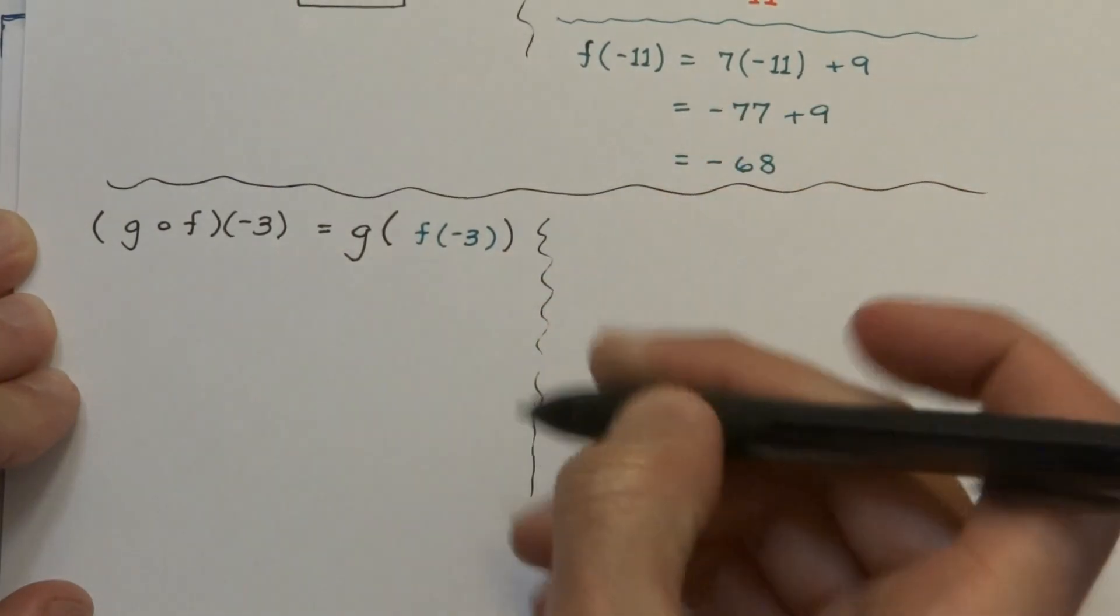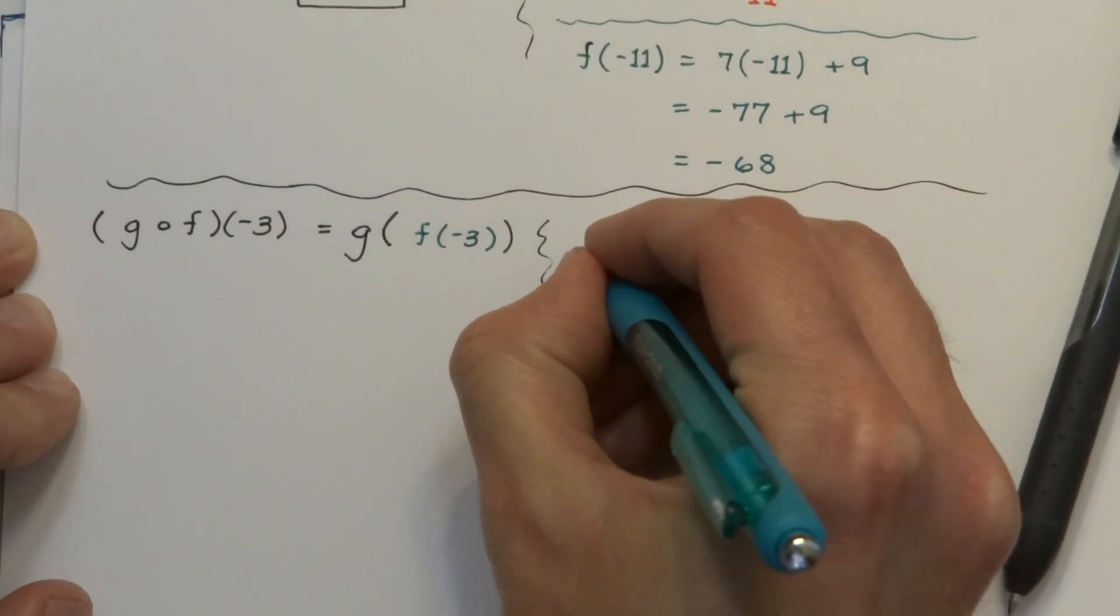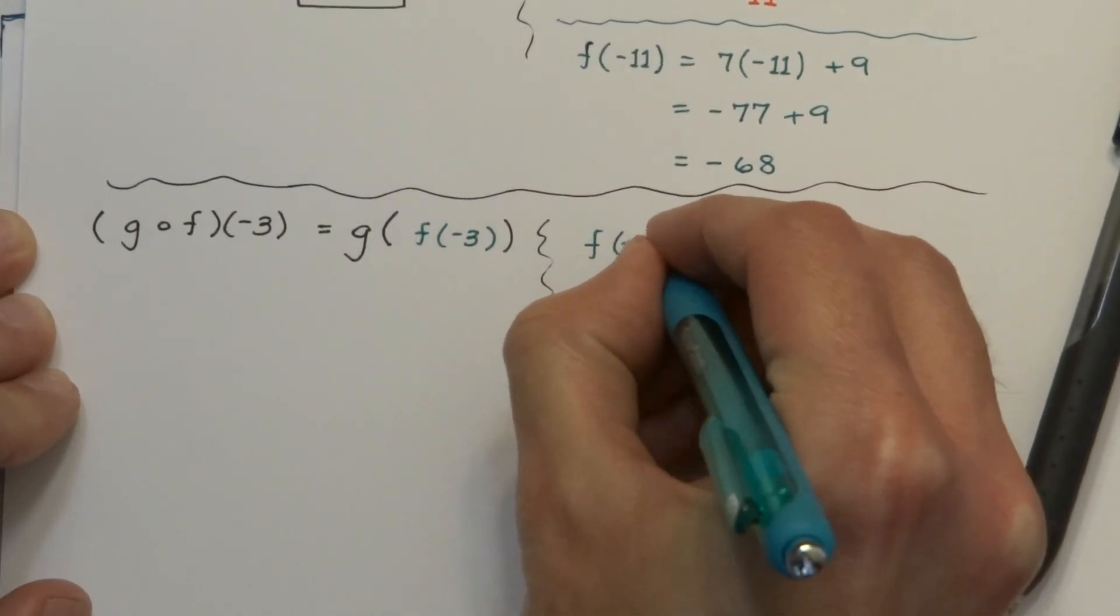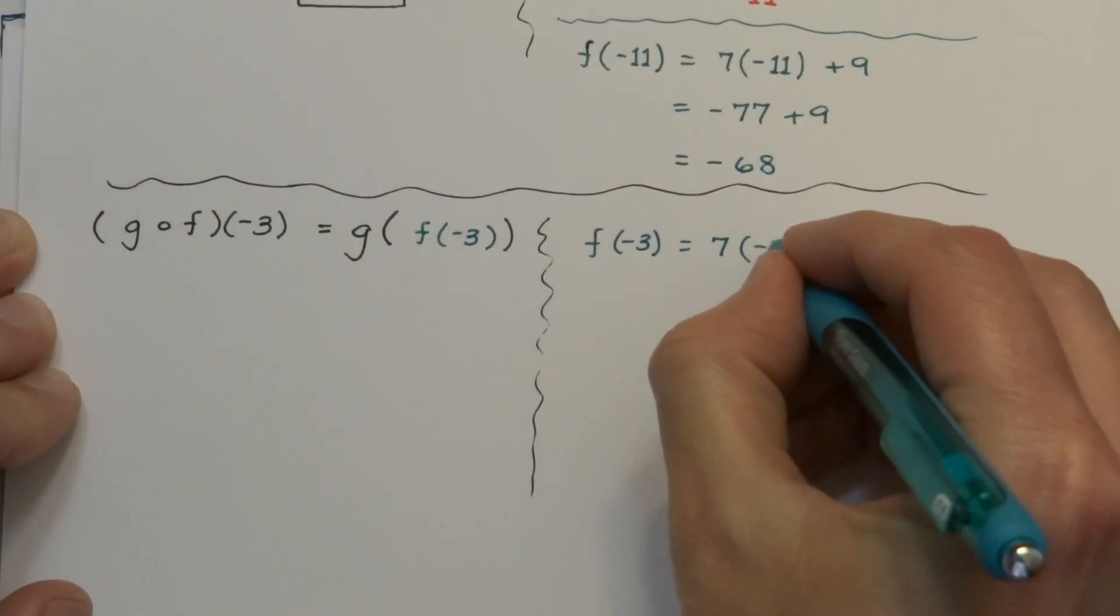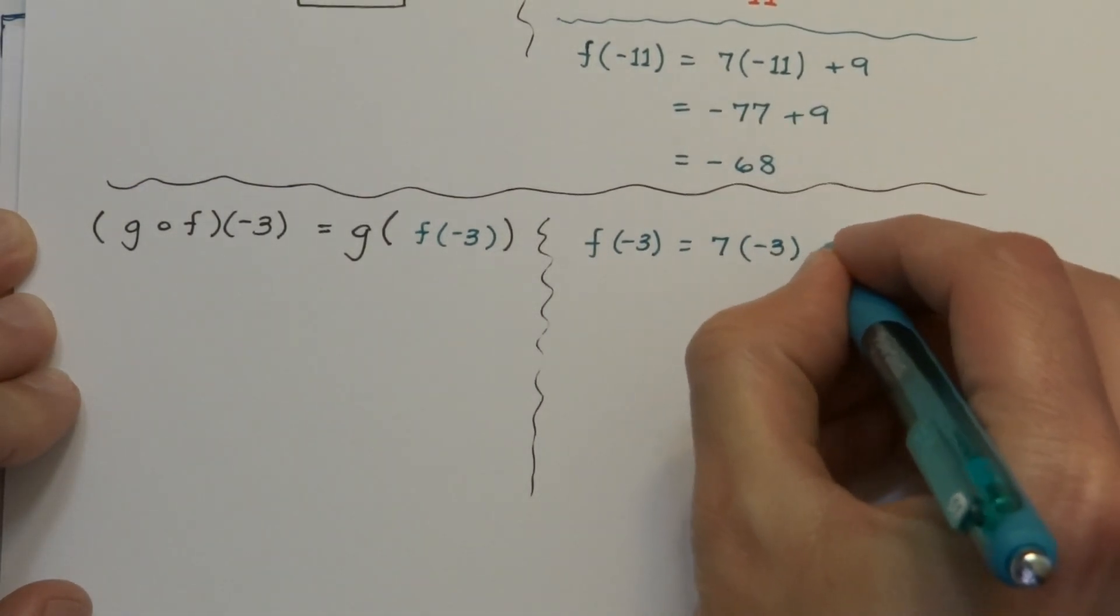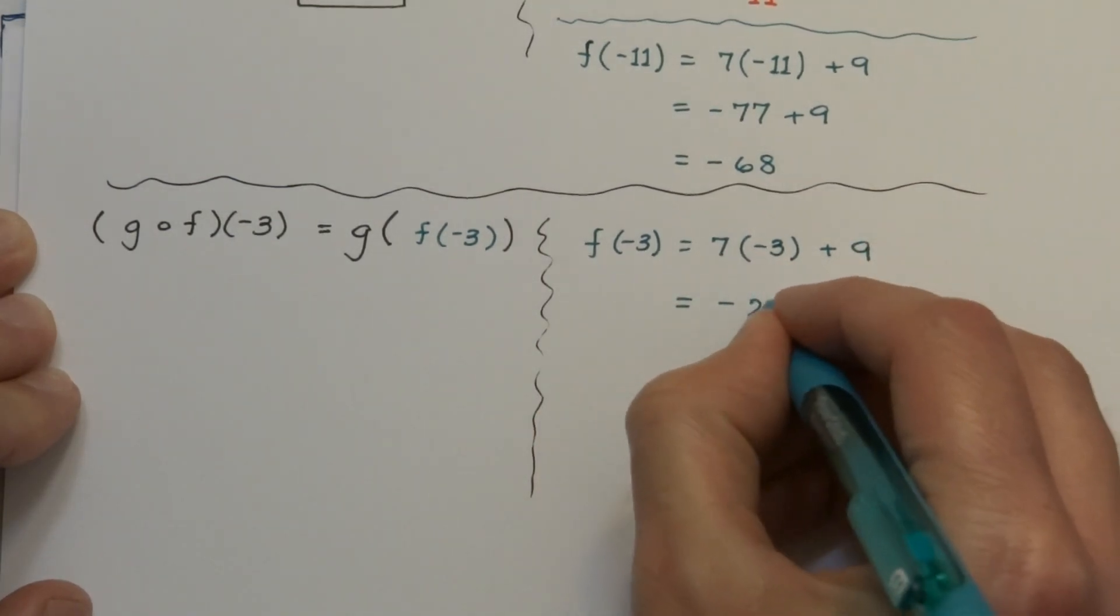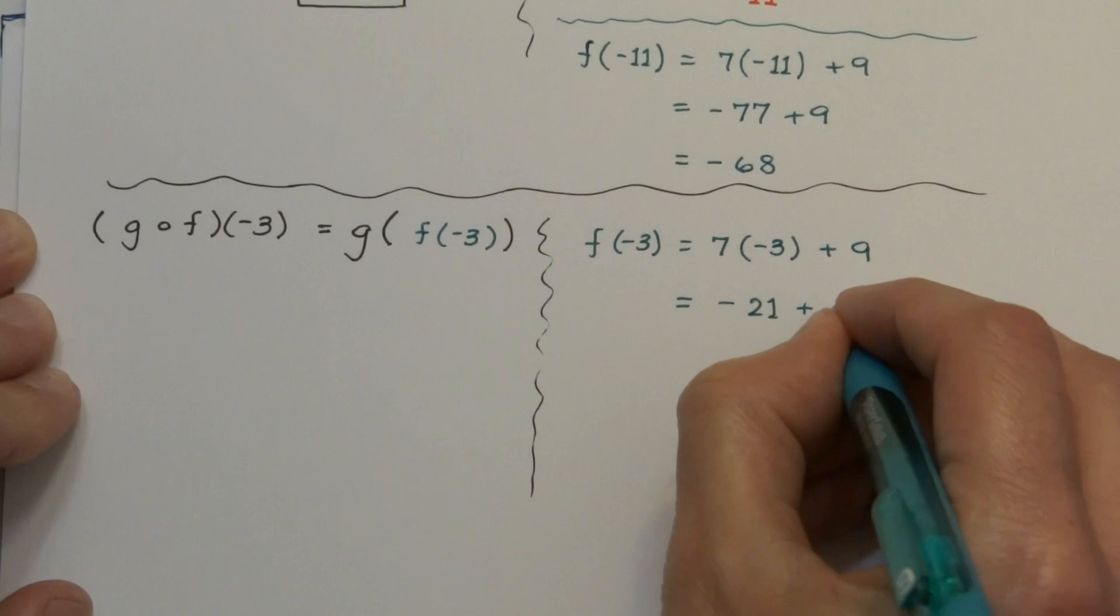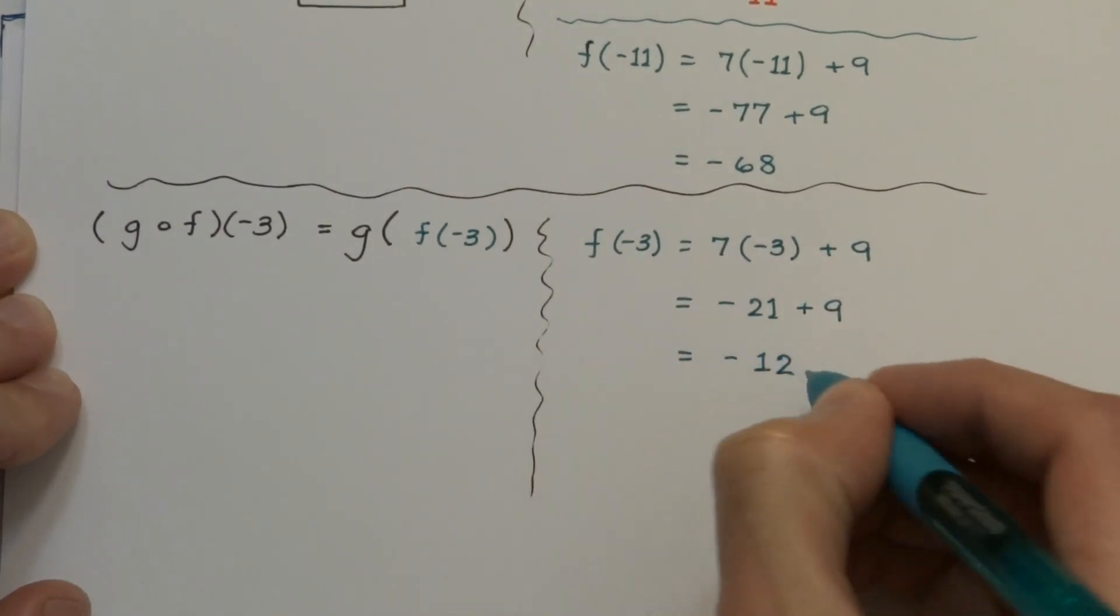And just as in the last part of the problem, we're going to do this off to the side. So f of negative 3 means 7 times x, so the x is being replaced with negative 3, plus 9, and we just do this nice simple arithmetic. Doesn't that make you feel good? And so we combine these and we get negative 12.